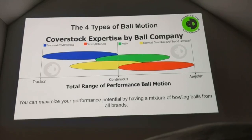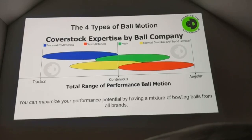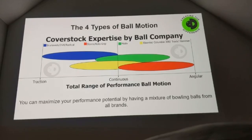This is an interesting slide — we took the four major ball companies: Brunswick, Storm, Motiv, and EBI, and looked at what their cover stocks typically do and where their strong suits are. That's a lot of data across many different people, situations, and tournaments. To the left you see traction, in the middle continuous, and on the right angular. From a pure cover stock standpoint, the Brunswick/DV8/Radical family tends to be best in traction and continuous. EBI is more toward traction-type continuous. Motiv leans more toward continuous moving toward angular, and Storm is more angular.